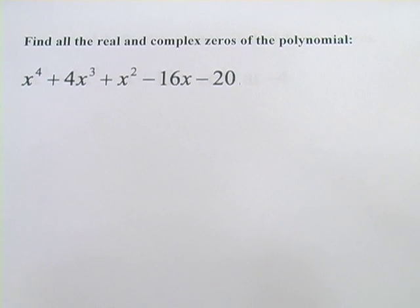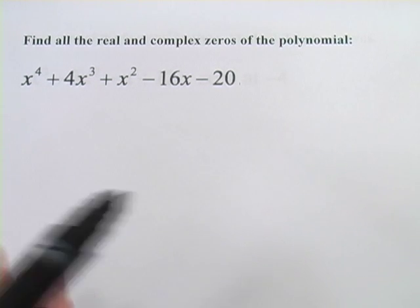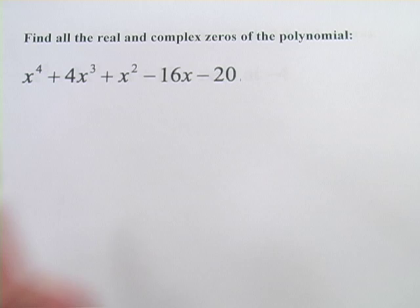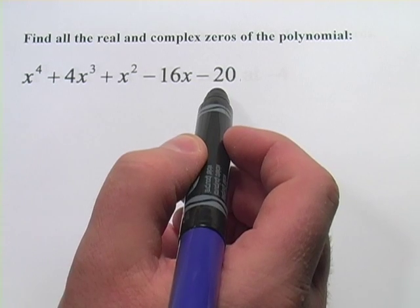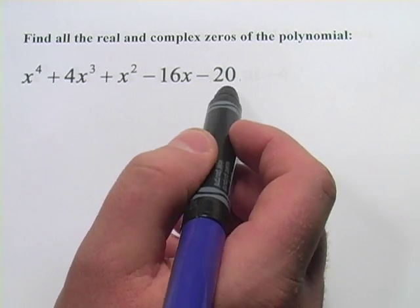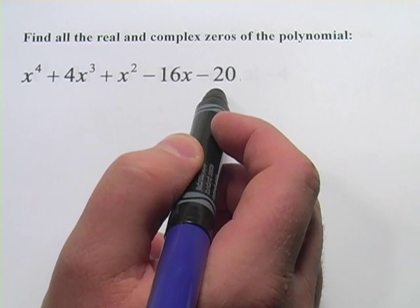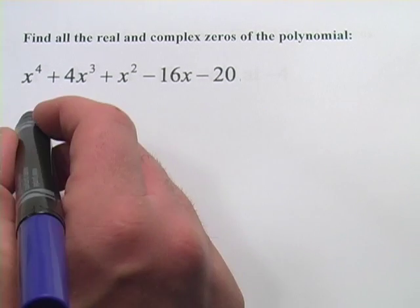So this one says find all the real and complex zeros of the polynomial. And it doesn't give us a head start. So we're going to have to do some synthetic division and just cast around. Luckily, we can use our rational zeros theorem to know that the factors here will be factors of 20. So let's give it a shot.